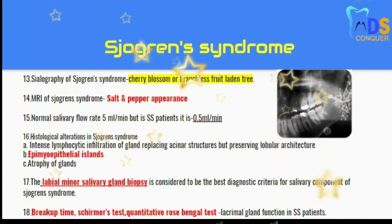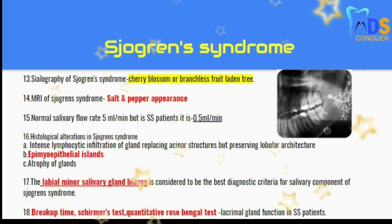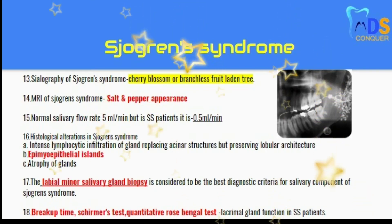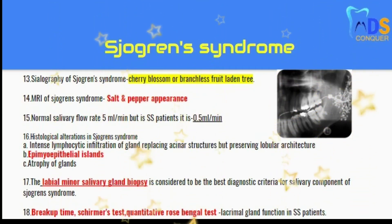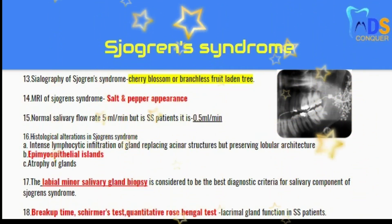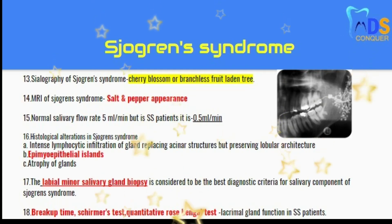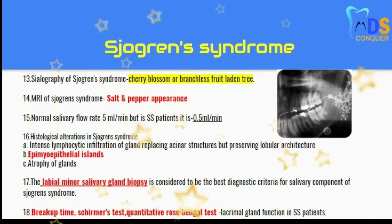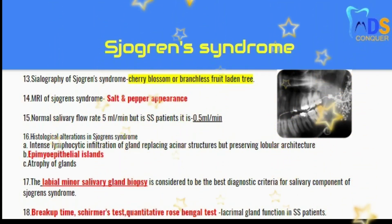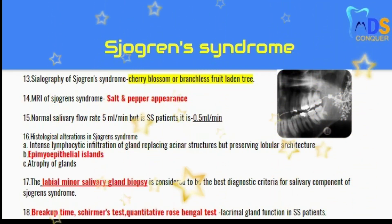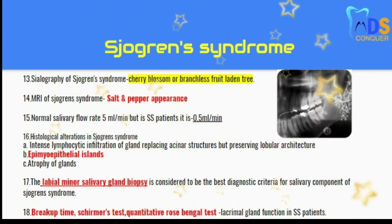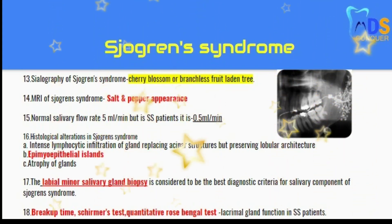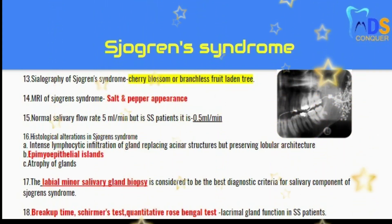Point 17: labial minor salivary gland biopsy is considered the best diagnostic criterion for the salivary component of Sjögren's syndrome. Point 18: break-up time, Schirmer's test, and quantitative rose bengal test are used to test lacrimal gland function in Sjögren's syndrome patients.